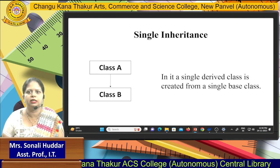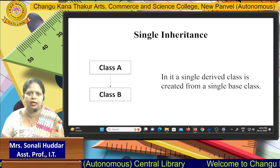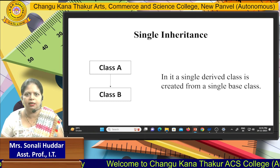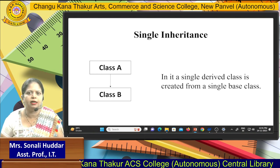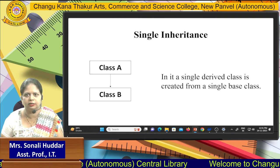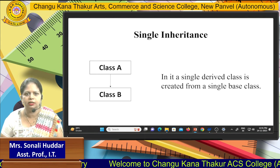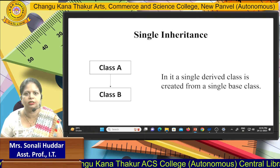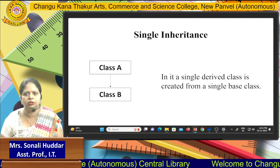The first type is single inheritance. In the diagram, there are two classes — class A and class B. Class A works as the base class and class B works as the child class; class B is inherited from class A. Here, only a single class works as the parent and a single class works as the child. That is why it is called single inheritance.